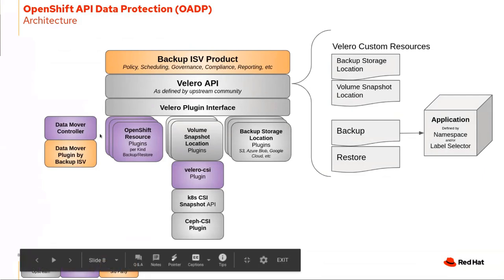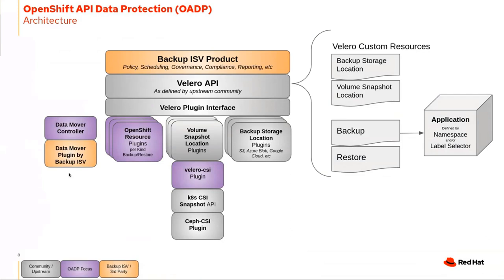There's another topic still in design phase for OADP — the data mover. If you take a CSI snapshot of, for example, a Ceph cluster, the backup of that volume still exists wherever the storage provider is. If that storage provider is on-cluster, there's a desire to actually move that snapshot to be consumed elsewhere. We want to provide a controller that allows backup ISVs to move CSI volumes wherever they'd like and restore them from anywhere. It's still in early design, but it's definitely a core component of a full backup solution.